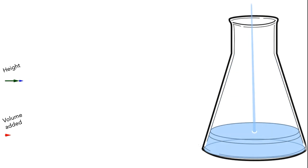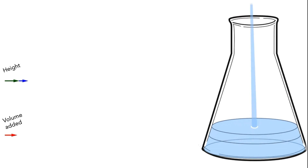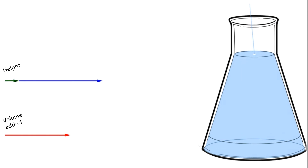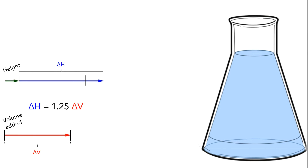Let's rewind this to the start of the pouring. As the animation plays, think about how the height — the length of the blue bar — and the added volume — the length of the red arrow — are changing with respect to each other. I'll also add black bars to indicate the change in volume. On the bottom, the distance between the bars is showing the amount of change in volume. We can copy this length onto the height bar. Now, if we think about the amount of change in height, we can see that delta H is roughly one and one quarter times as large as delta V.